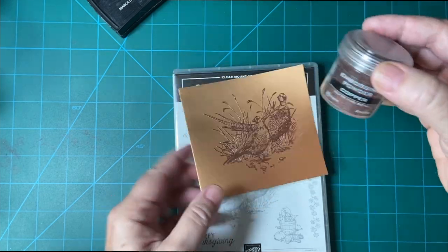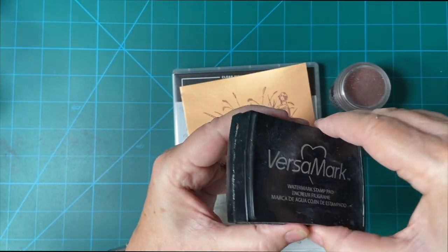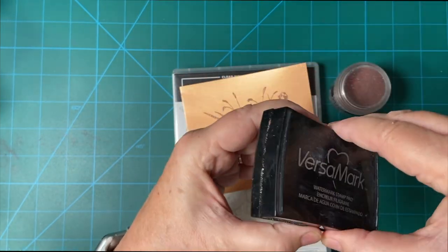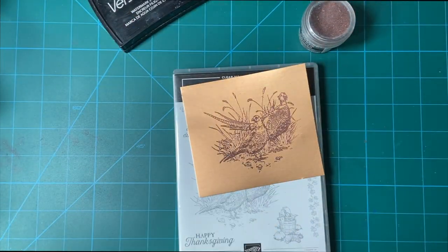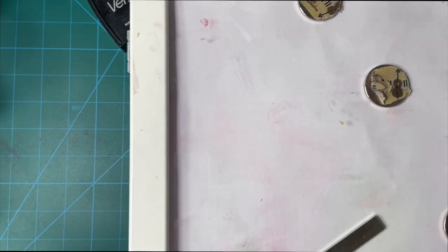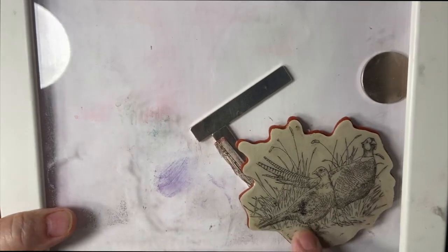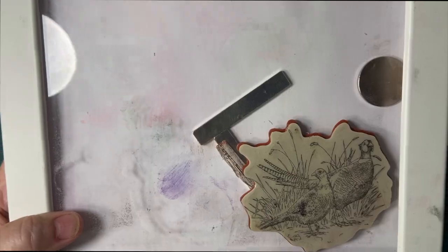This is embossing powder and this is the sticky ink called Versamark that I'm going to be using as well as my homemade stamp positioner. As you can see I already have my stamp picked up.